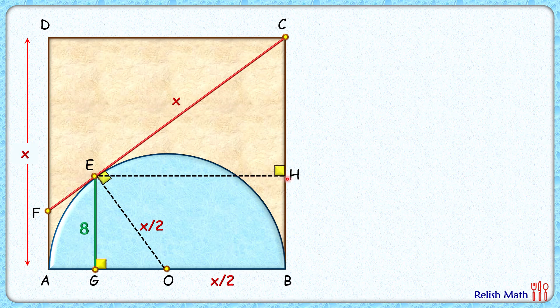Now this angle here, let's assume it's theta degrees. This complete angle is 90, so the remaining angle will be 90 minus theta. Now EH and EG are perpendicular and thus this remaining angle here will again be theta degrees.